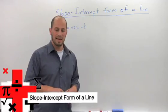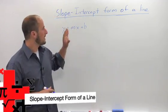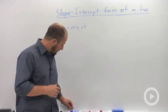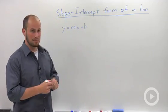Slope-intercept form of a line is one of the first ways we deal with a line equation, and basically what it is is y equals mx plus b.